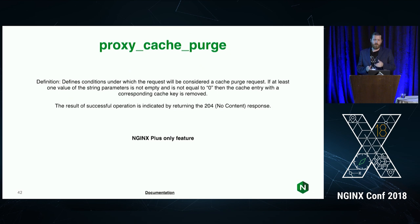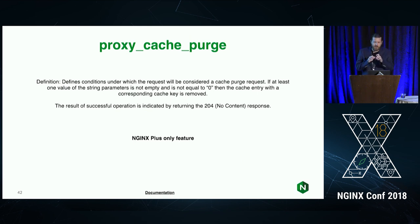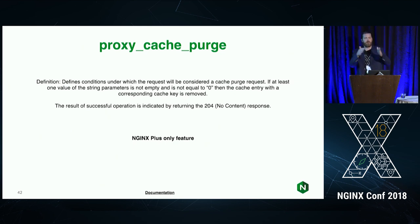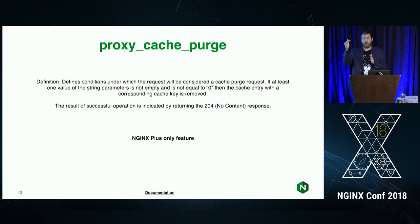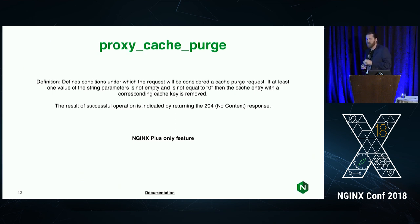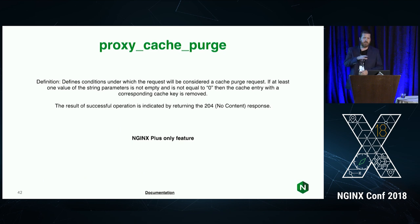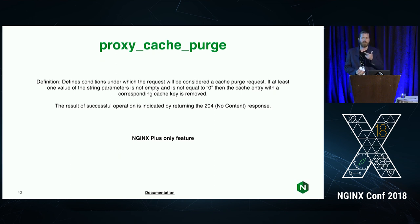We also have a purge API in NGINX Plus. If you don't want to go to the terminal and manually search through cache keys, you can purge the cache based on the full request URI. For example, if you're caching /api/v1 and /api/v2, you can hit the API only for v1 and v2 remains completely unaffected. It also supports wildcards — so /api/v1/* will go through and invalidate all those cache keys so the next request gets the fresh version.